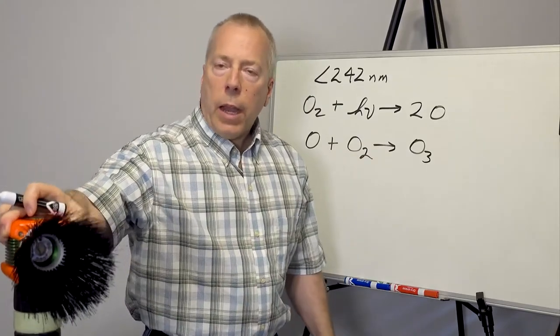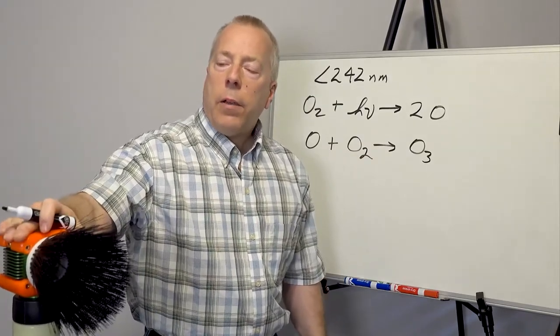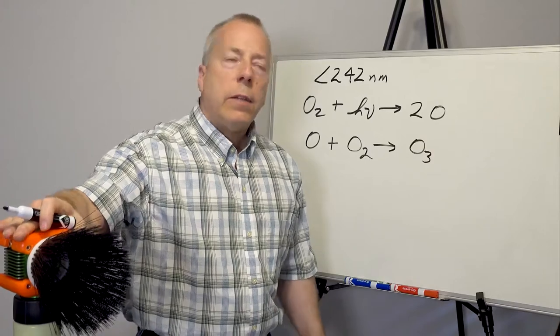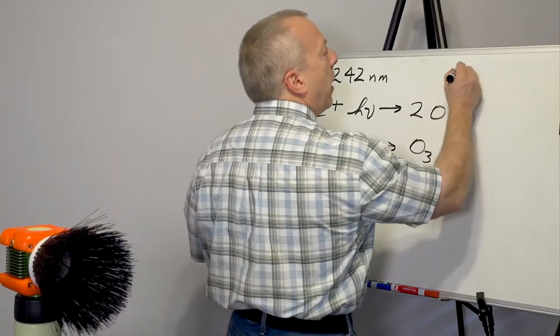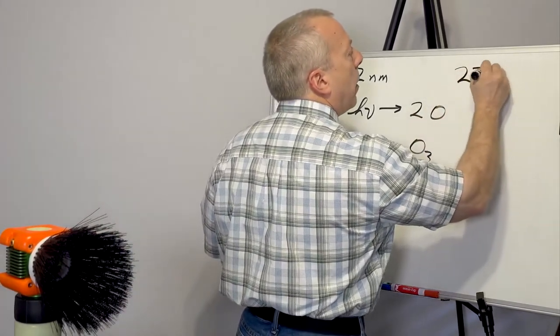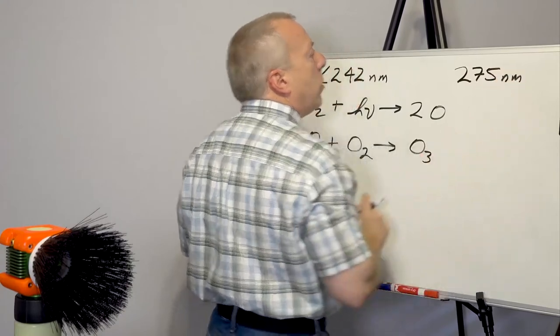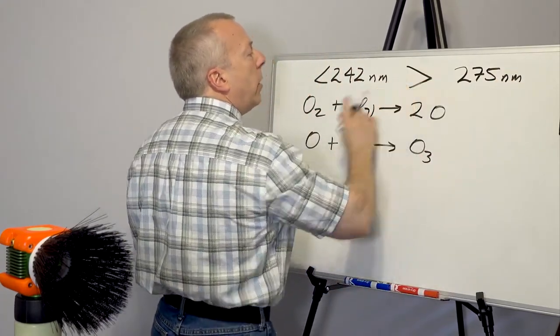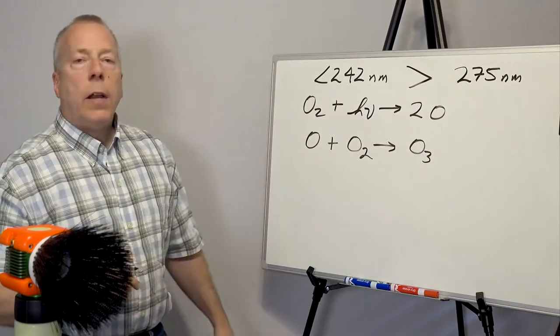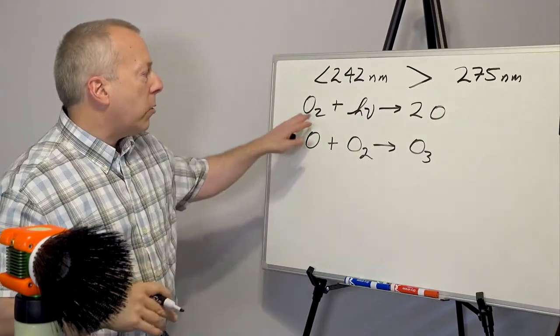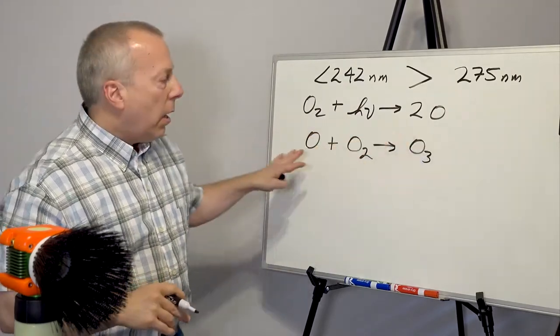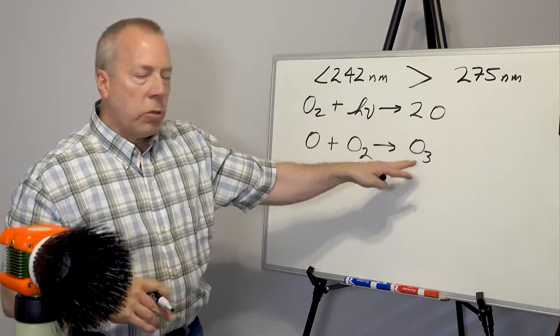In the case of the UVC body light, the emitted wavelength of light is 275 nanometers. 275 nanometers is greater than the 242 nanometer wavelength that's required to generate the oxygen cycle to ozone.